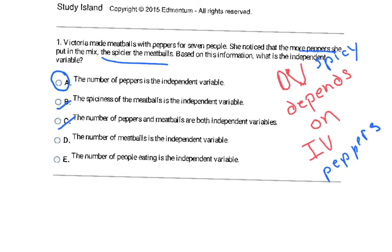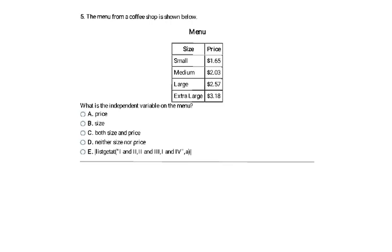Only one thing can be the independent variable per problem, so it can't be B or C — you can't have two. The number of meatballs is not D or E, and the number of people stays the same — it doesn't change. If you get a question with a table, that should be exciting because these are much more straightforward than word problems. When working with a table, the first column is always x and the second column is always y. The first column is always your input, the second is always your output. X is always the independent variable, so here, size is going to be the independent variable. The answer is B, the size.